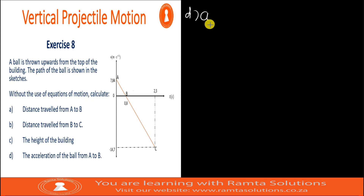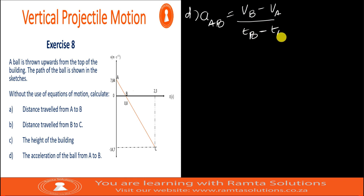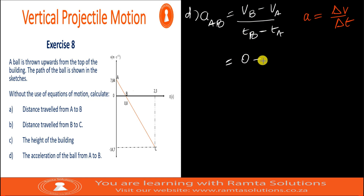Acceleration for AB is velocity at B minus velocity at A, all over time at B minus time at A. This comes from the fact that acceleration equals change in velocity over change in time. Velocity at point B is 0. Velocity at point A is 7.84. Time at point B is 0.8, and time at point A is 0.